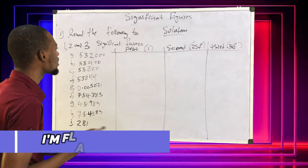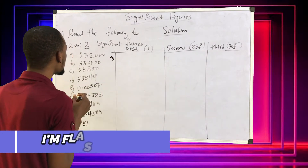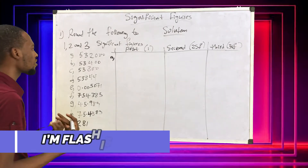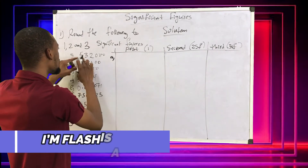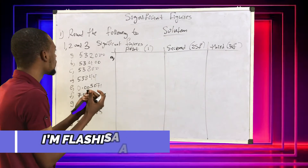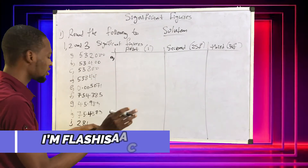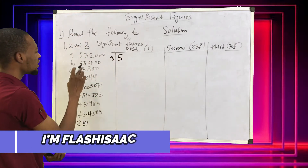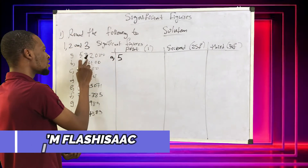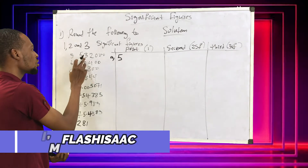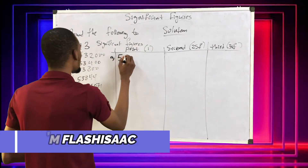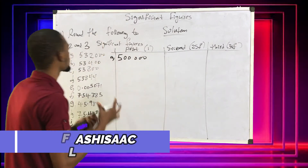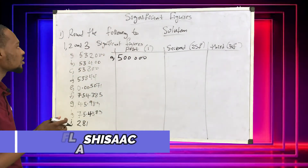Look at the first one: 532000. First significant figure — we simply need only the first number that is not zero. So 5 is the first significant figure. Then 3 is not up to 5, so we can't approximate. We change everything after 5 to zero: 500000. That is 532000 to one significant figure.